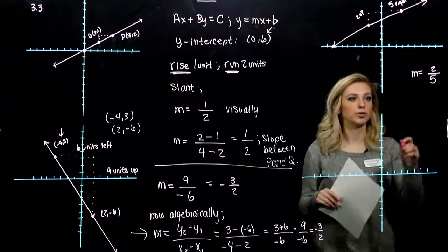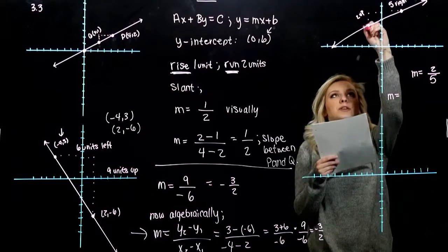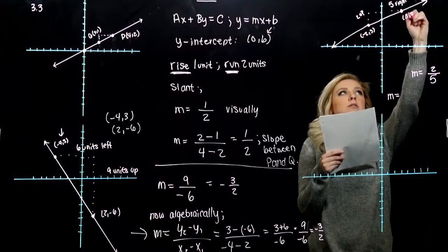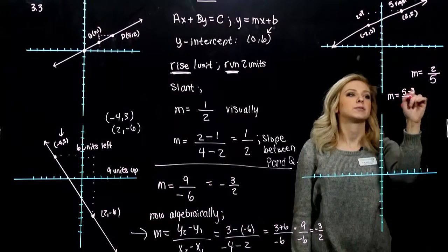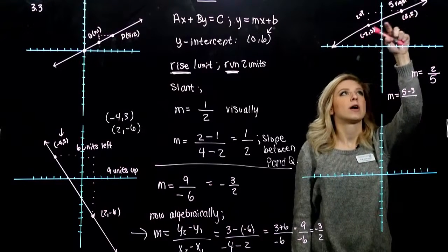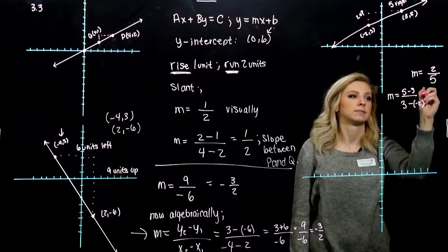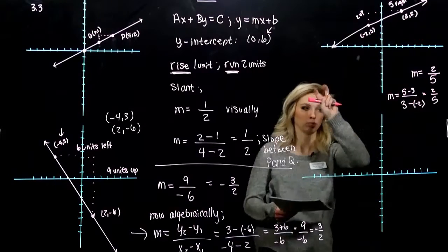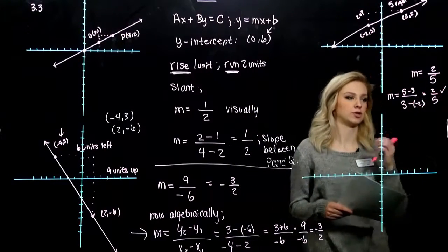And we can prove it, again, algebraically, just to make sure. My points: difference between the y's, 5 minus 3. Order doesn't matter as long as you're consistent. So y minus y, x minus x. I've got 2 over 5. We proved it, along with our visual representation. We got the same thing.